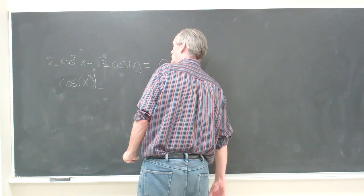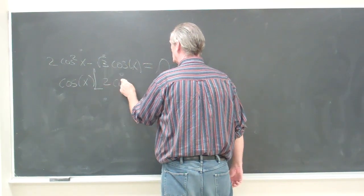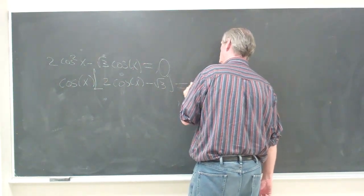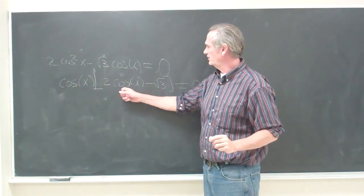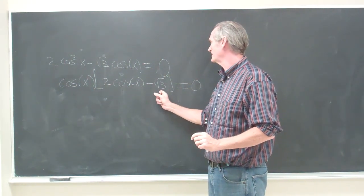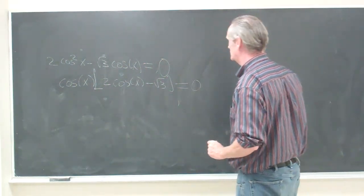The first thing we want to do is factor out a cosine of x. So cosine of x times (2 cosine of x minus square root of 3) equals 0. You might think you're done because all you need to know is when cosine of x equals square root of 3 over 2, but you also need to know when cosine of x equals 0.